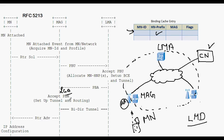The proxy care-of address of the mobile node is included in the proxy binding acknowledgement along with the home network prefix, which is used to identify the mobile node in the Proxy Mobile IPv6 domain. The home network prefix will not change when the mobile node moves from one mobile access gateway to another. Until the bidirectional tunnel is set up, the mobile access gateway will not send a router advertisement in response to the router solicitation message.